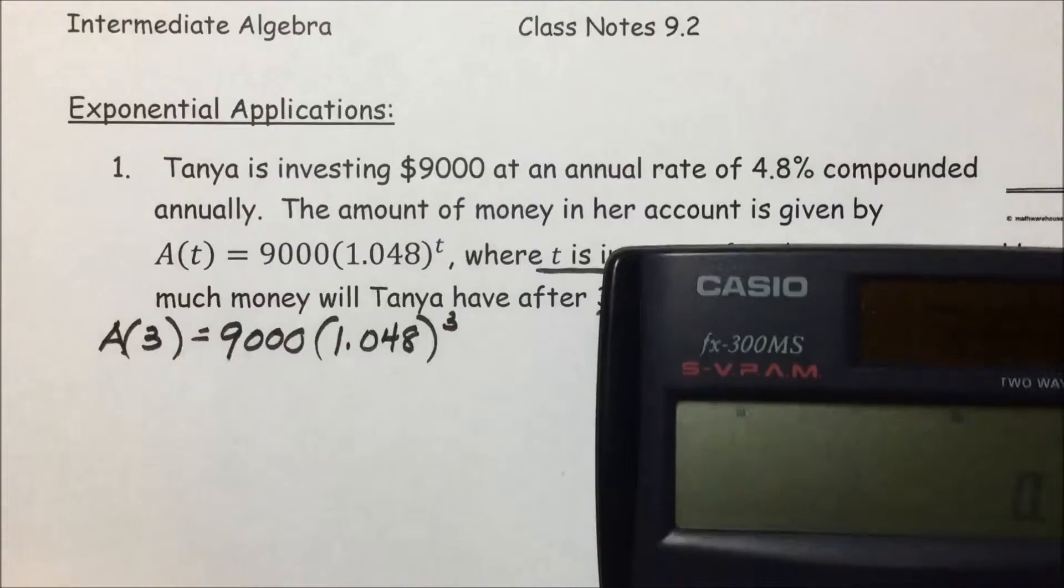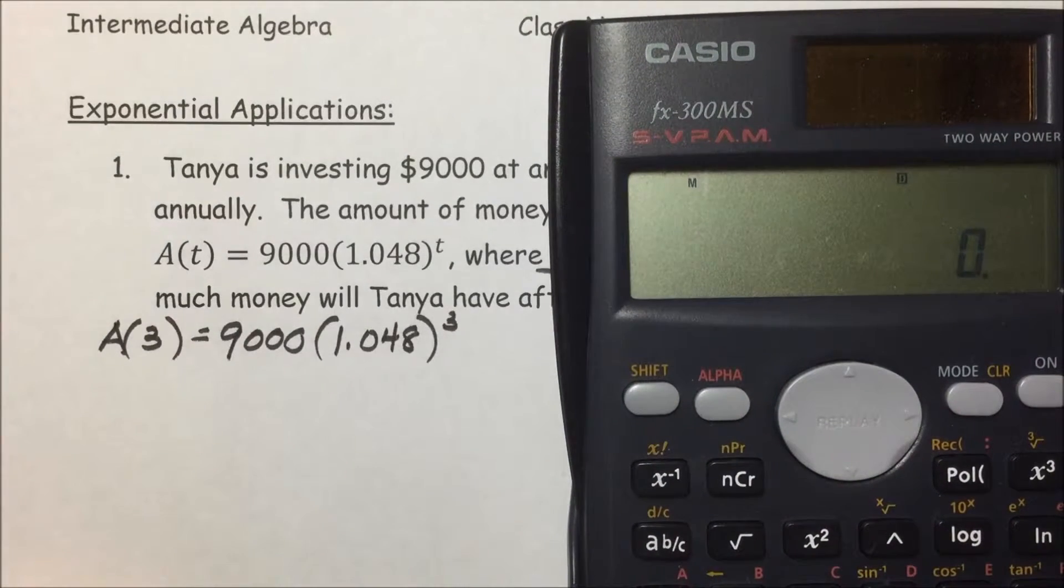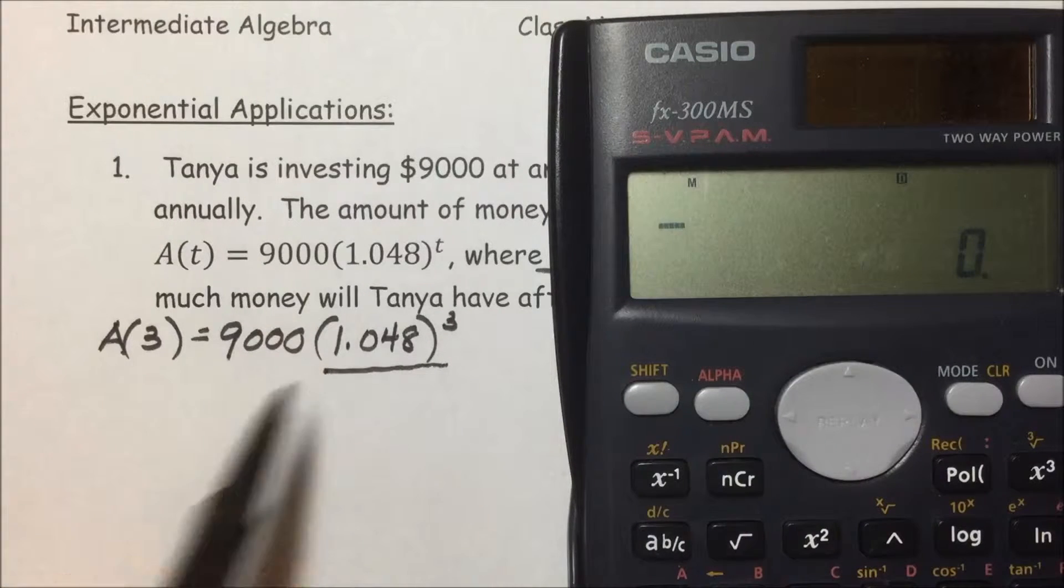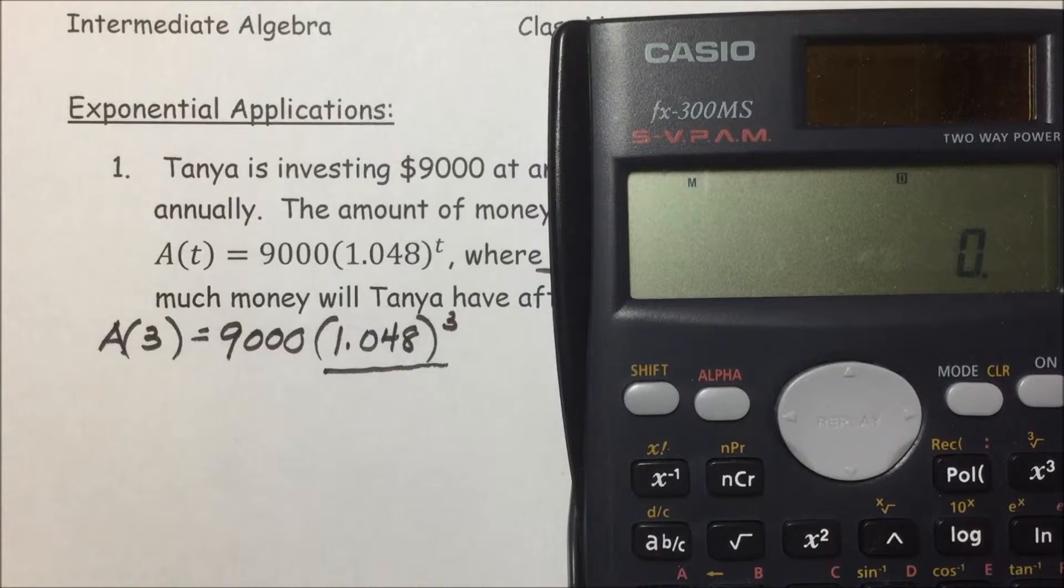Using a calculator with an exponential key on it, I have a Casio model here. Following the order of operations, we'll do exponents first since parentheses are already simplified. So 1.048.